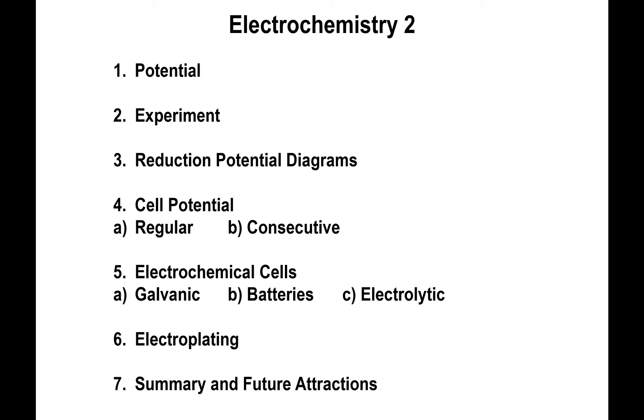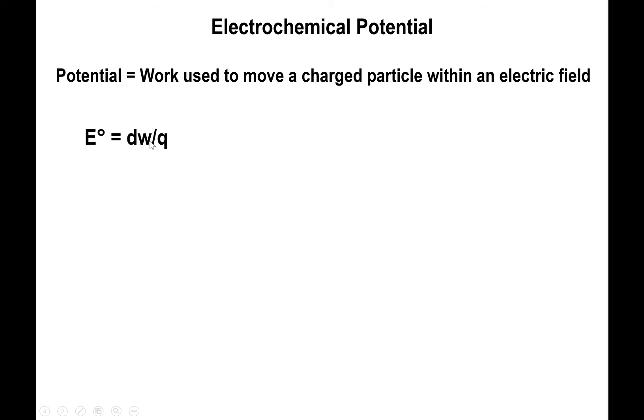We get to talk about proper electrochemistry. We're going to start by defining the potential. By definition, the potential is the work used to move a charged particle from one point to another within an electric field. Formally, the potential has the following equation: the change in work associated with moving that particle in the electric field, and this depends on the charge — so you're actually dealing with work per charge.